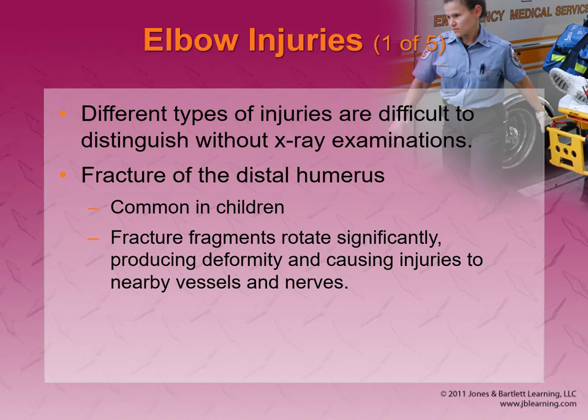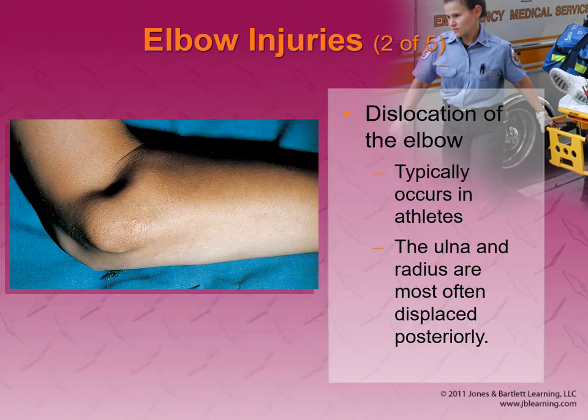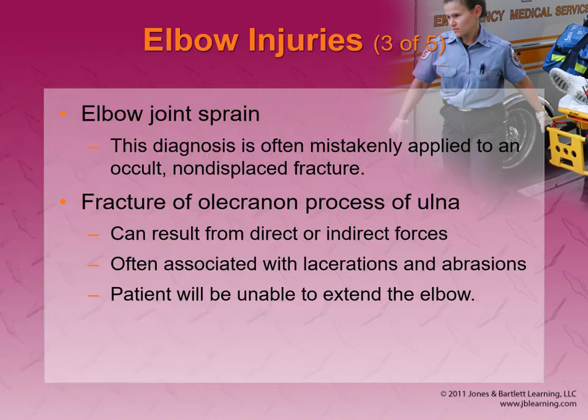Elbow injuries are very tough, common in children, and there's lots of vessels, nerves, and arteries in that elbow joint — it's a very important joint. If there's a dislocation, it's very hard to tell what we have until we have an x-ray. Generally, we want to splint it as it lies, make sure there's PMS, and take it to the hospital. I wouldn't fool around with elbow dislocation. Without an x-ray, it's really hard to tell arm fractures in general.